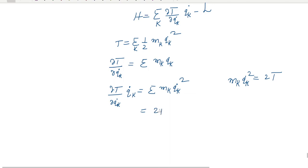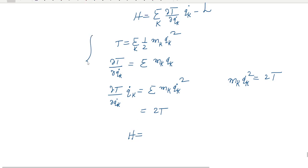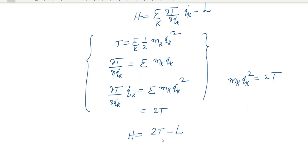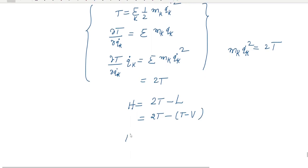So summation k of (∂T/∂q̇k)·q̇k = 2T. Therefore H = 2T − L = 2T − (T − V) = T + V. Hence H = T + V = total energy E = constant. Thus the Hamiltonian H represents the total energy of the system, and this is the conservation of energy.